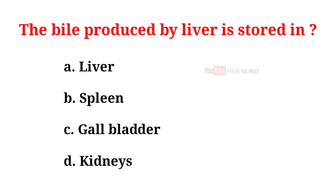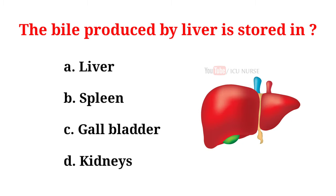The bile produced by the liver is stored in: A. Liver. B. Spleen. C. Gallbladder. D. Kidneys. And the correct answer is C. Gallbladder.